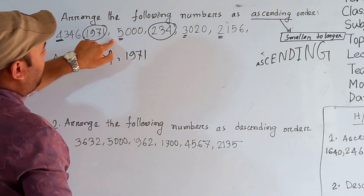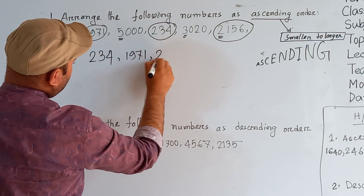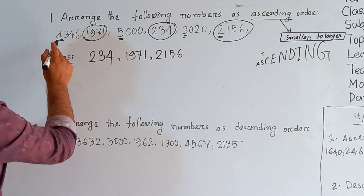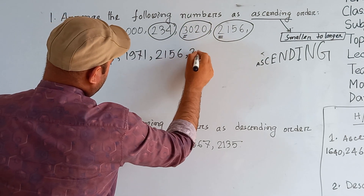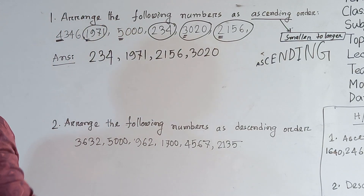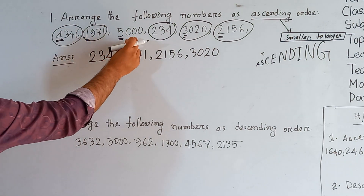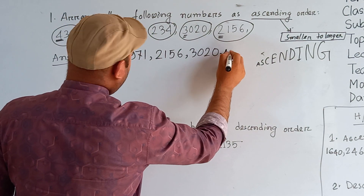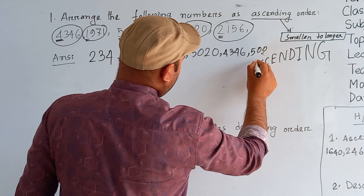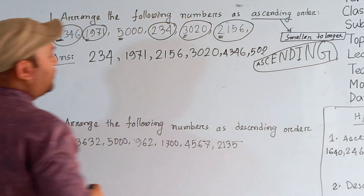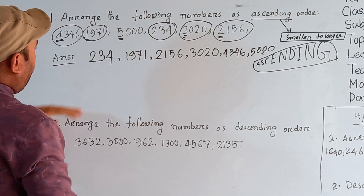Among the remaining thousands — 4, 5, 3, and 2 — the number 2 is smallest, so we write 2156 next. From 4000, 5000, and 3000, the smallest is 3000, so we write 3020. Now between 4000 and 5000, we write 4346 before 5234. So the ascending order is: 234, 1971, 2156, 3020, 4346, 5234 — from smallest to largest.